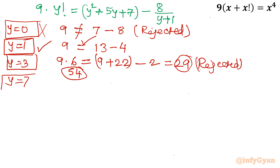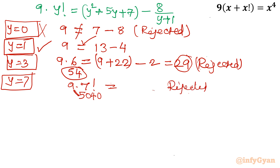For y equal to 7: the left hand side is 9 times 7 factorial equals 9 times 5040, which is a very large number. The right hand side will not match. So y equal to 7 is also rejected. Therefore the accepted solution is y equal to 1.